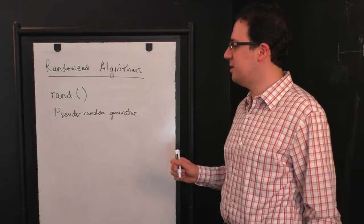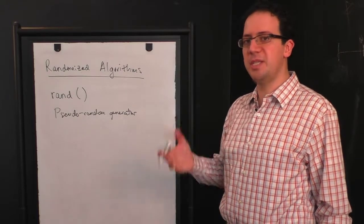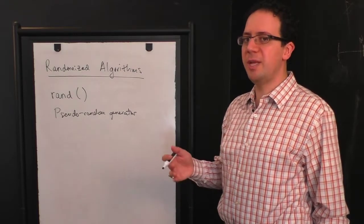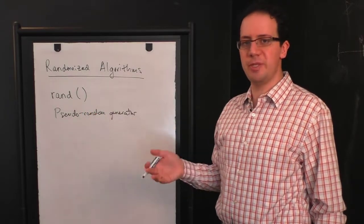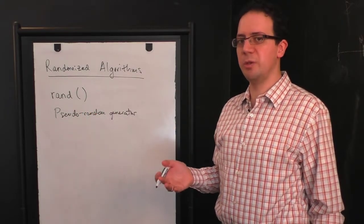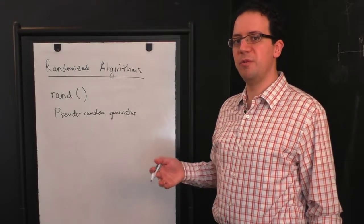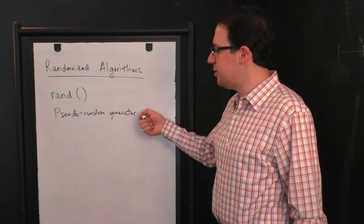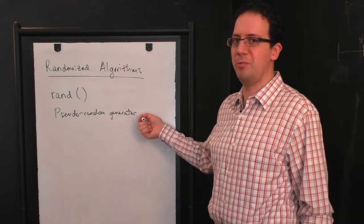So a pseudorandom generator is a deterministic algorithm which takes in what's called a seed, and starting from that seed, it generates a deterministic sequence of numbers that if you didn't know the seed, the sequence of numbers looks random. The goal is for it to look random enough to fool any algorithm that's using this pseudorandom generator essentially into thinking that it's getting truly random numbers.